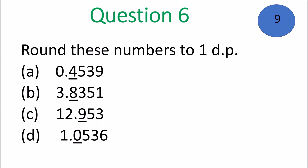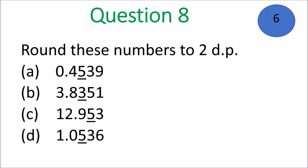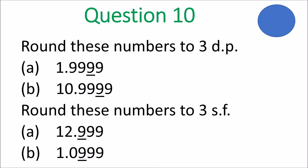Question 6 — round to one decimal place. Answers: A is 0.5, B is 3.8, C is 13.0, and D is 1.1. Question 7 — one significant figure: A is 0.5, B is 4, C is 10, and D is 1. Question 8 — two decimal places: A is 0.45, B is 3.84, C is 12.95, and D is 1.05. Question 9 — two significant figures: A is 0.45, B is 3.8, C is 13, and D is 1.1. Question 10 — three decimal places: A is 2.000, B is 11.000. Three significant figures: A is 13.0 and B is 1.10.